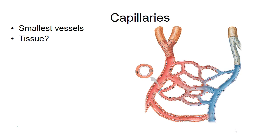If you want to decrease flow to a capillary bed, you close off the off-ramps to that capillary bed — the blood will flow by and you'll have decreased perfusion. If you want to increase perfusion, you can relax the smooth muscle sphincter and allow more blood to flow in. It's kind of like regulating on and off-ramps to capillary beds.